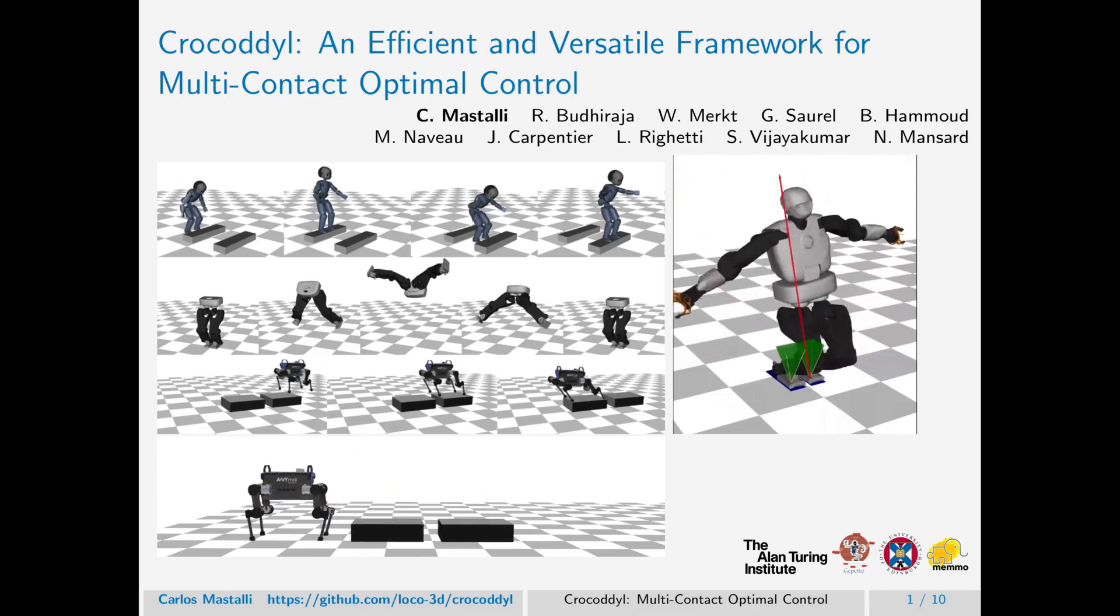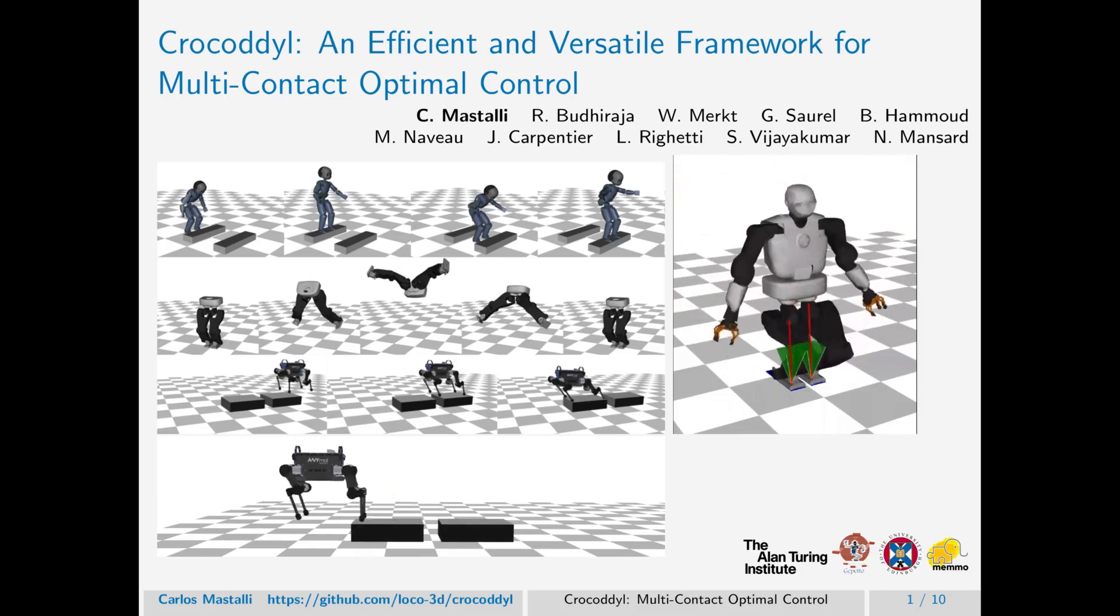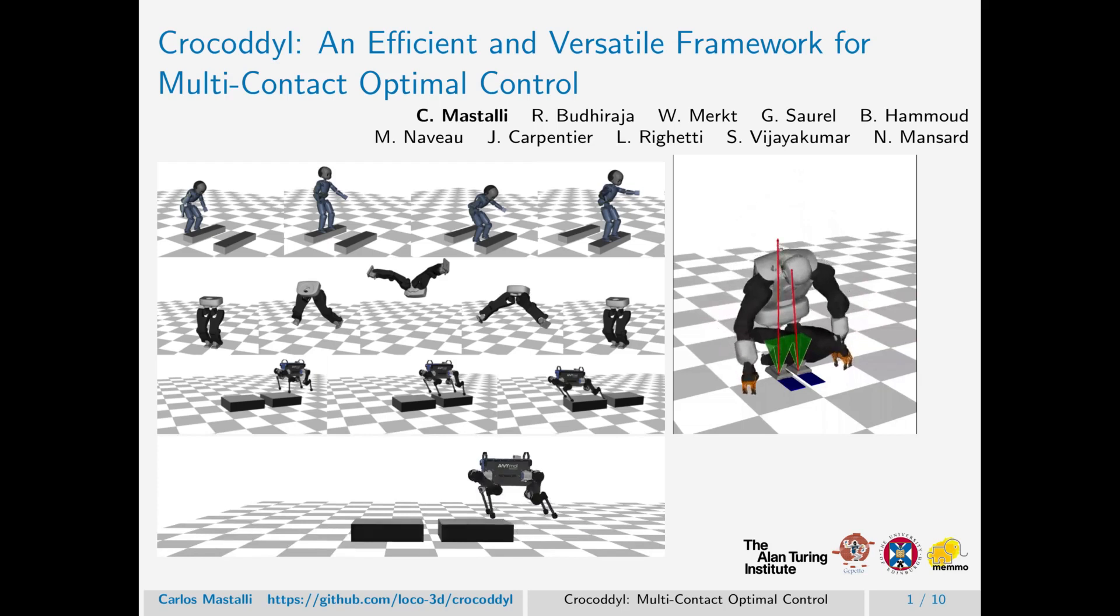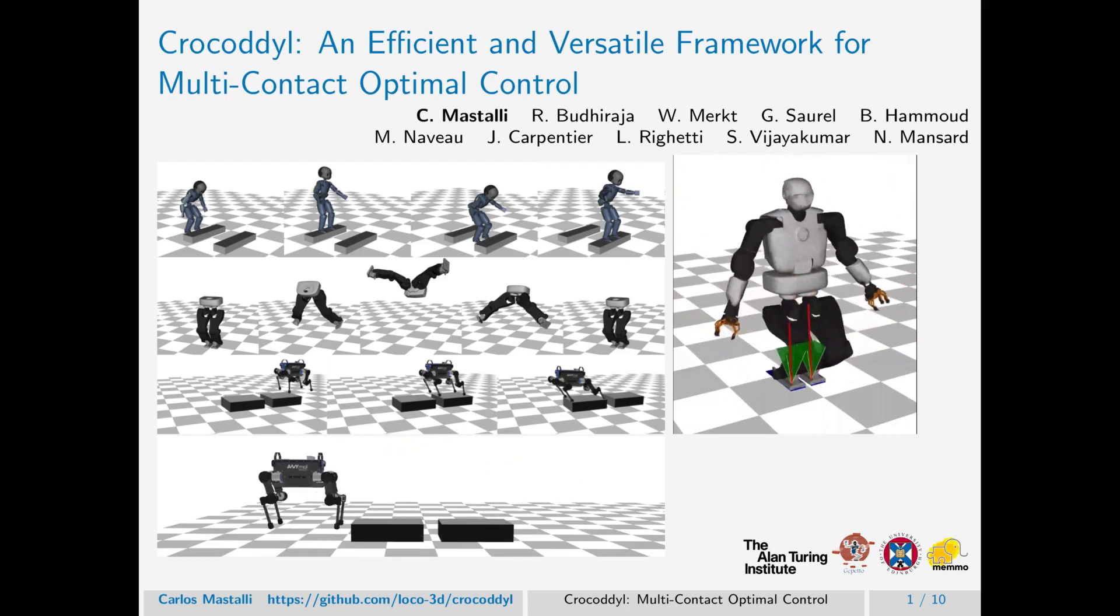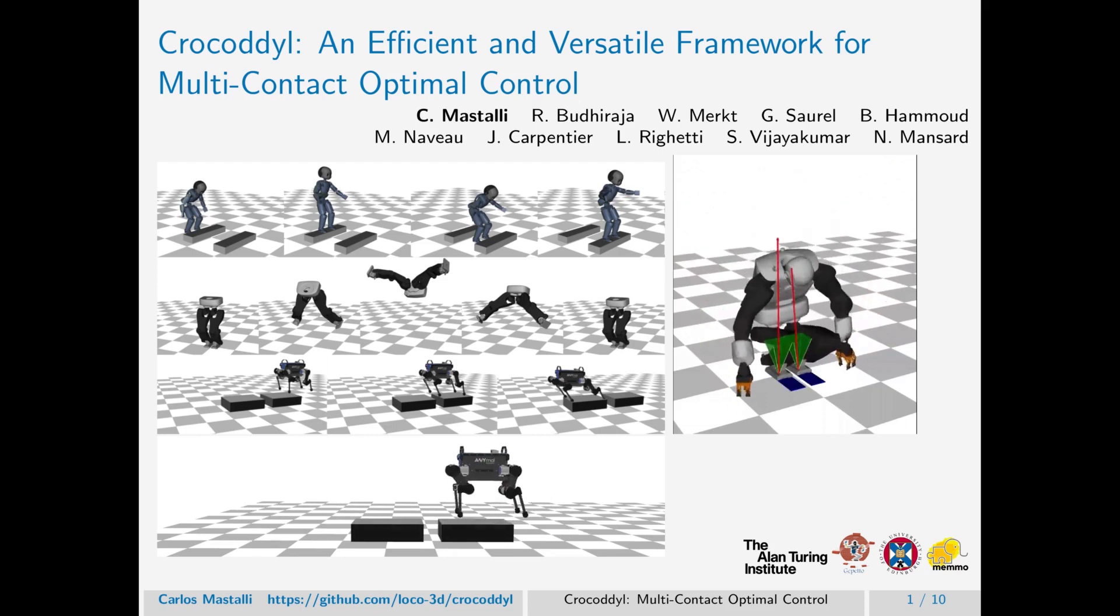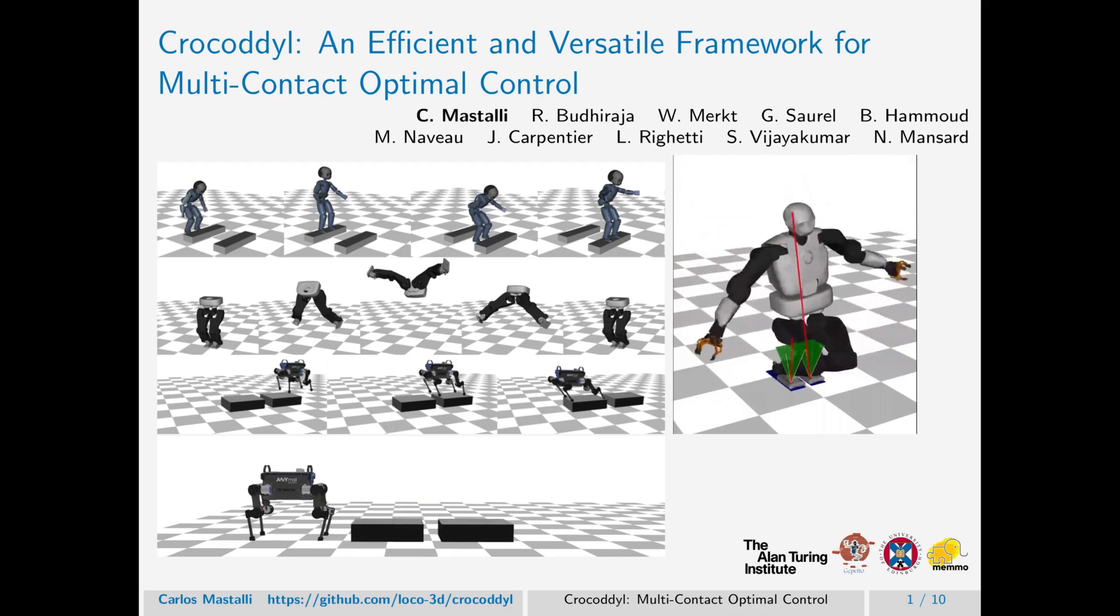We present Crocodile, an efficient and versatile framework for multi-contact optimal control. Crocodile is developed for model predictive control applications. It can also generate highly dynamic maneuvers such as jumping in quadruped and humanoid robots.